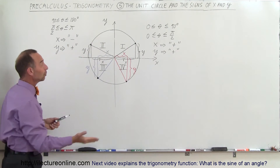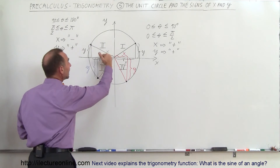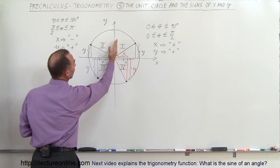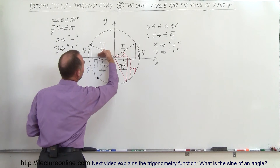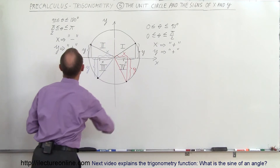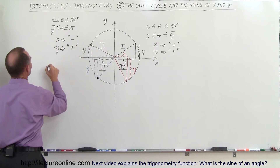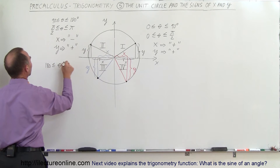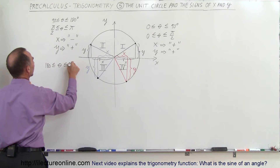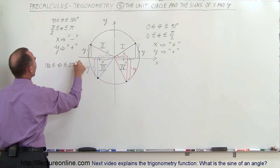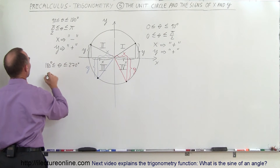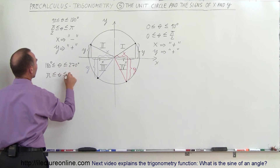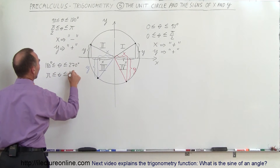For an angle between 180 and 270 degrees, that's in the third quadrant. We can say that 180 is less than or equal to theta, less than or equal to 270 degrees, or pi less than or equal to theta, less than or equal to 3 halves pi.